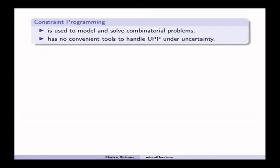Constraint programming is used to model and solve combinatorial problems. There exist actually a lot of different formalisms within constraint programming to handle uncertainty. However, none of them are really convenient to deal with the unit production problem. I won't give you any details in this video. If you want to know more, I invite you to read the paper.